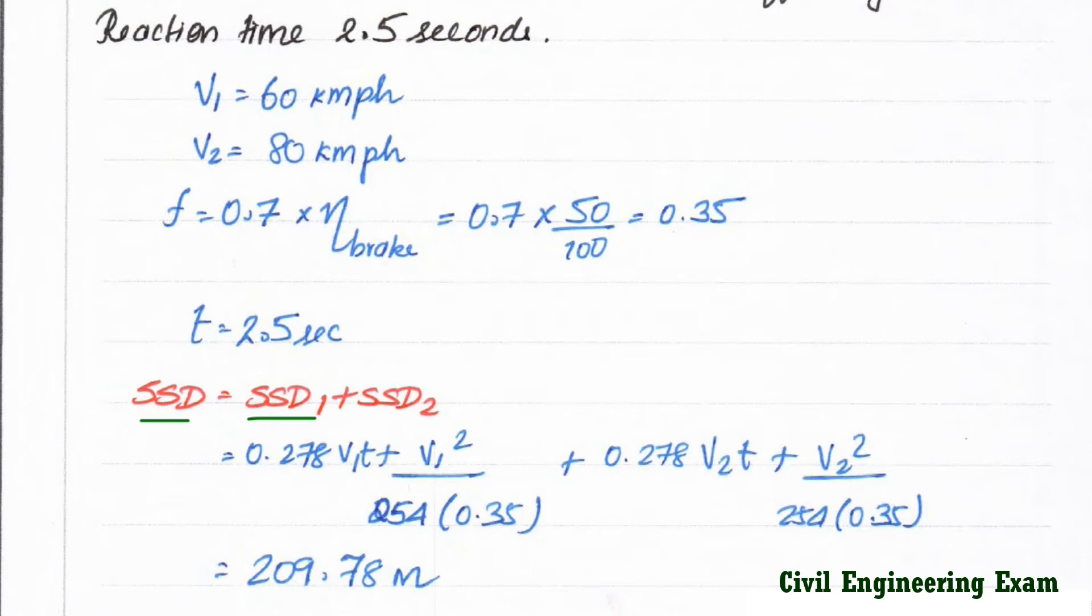Now we know the formula for SSD. 0.278 V1 T plus V1 square divided by 254 into F. Likewise SSD2 0.278 V2 into T plus V2 square divided by 254 into F.